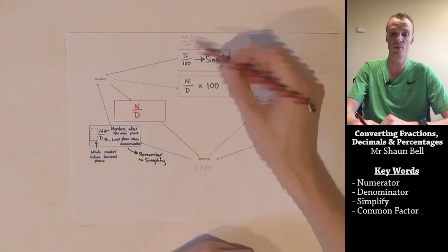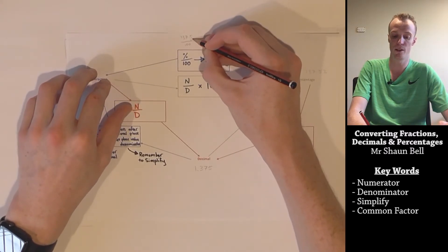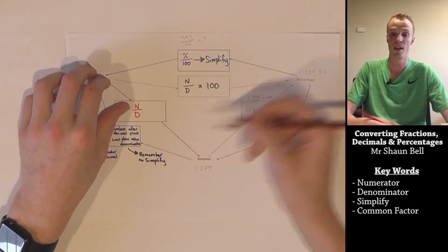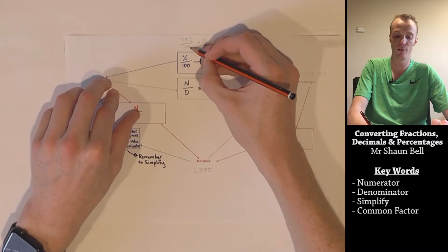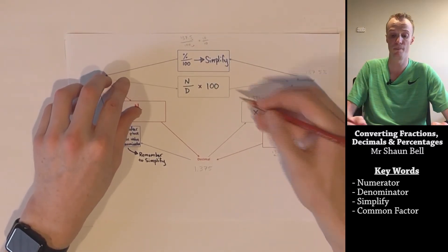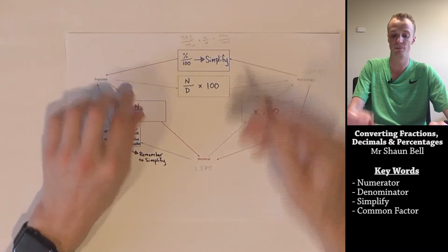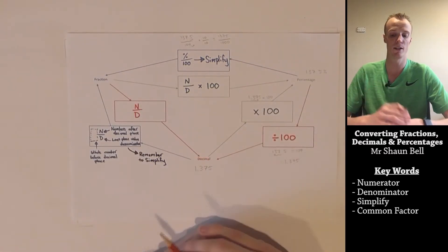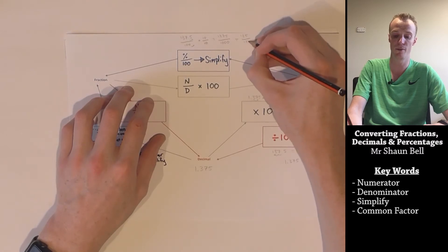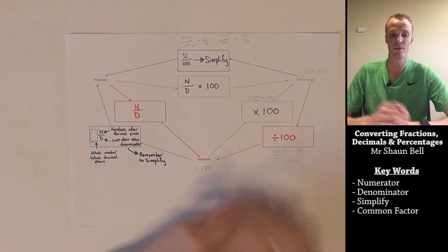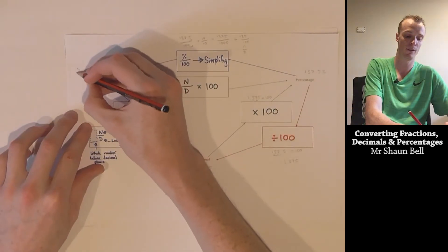Now we've got our percentage of 137.5%, let's convert it to a fraction by taking 137.5 and dividing by 100. We notice there's a decimal in the fraction, so to remove it we multiply by 10 over 10, which creates a numerator of 1,375 and a denominator of 1,000. Our next step is to simplify by finding the highest common factor, which is 125 over 125. 125 goes into 1,375 eleven times and into 1,000 eight times, so our fraction is 11 over 8.